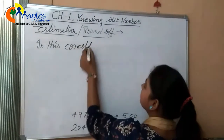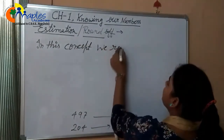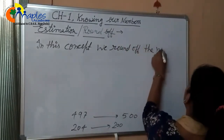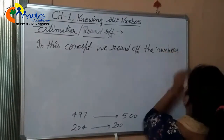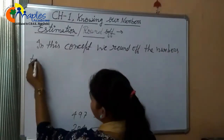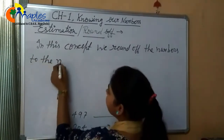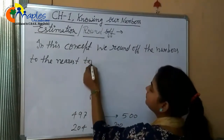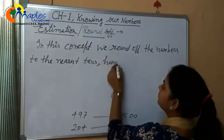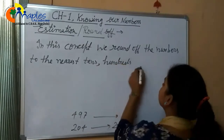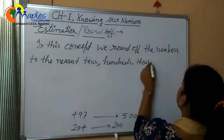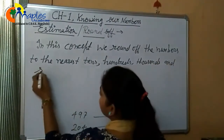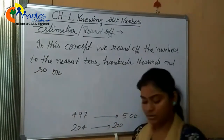In this concept, we round off numbers to the nearest tens, hundreds, thousands, and so on.